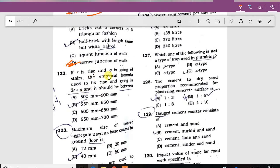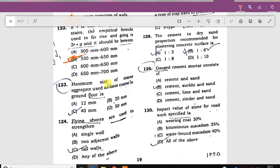If R is the rise and G is the going of the stair, the empirical formula is 2R plus G should be between 550 to 650 mm. The maximum size of coarse aggregate used in the ground floor is 40 mm.